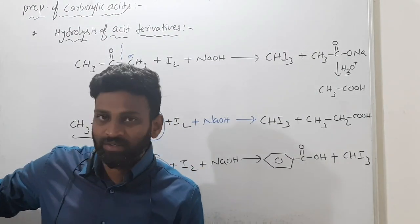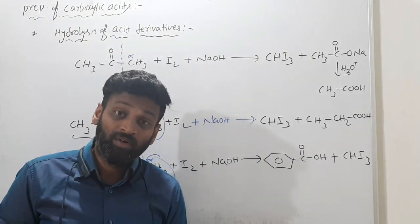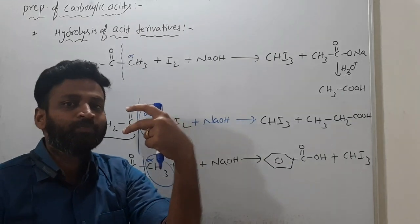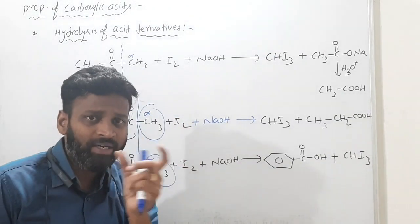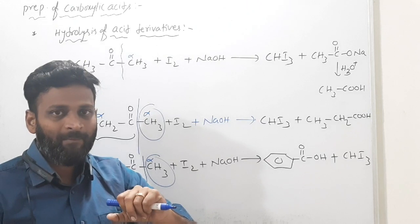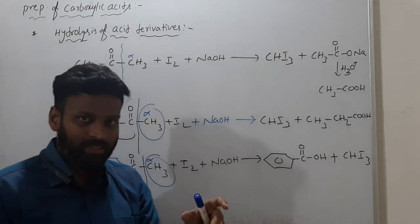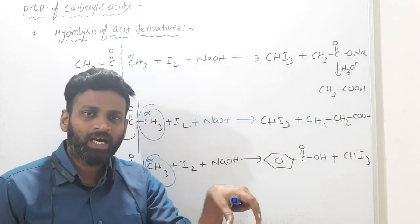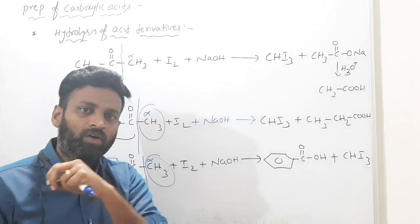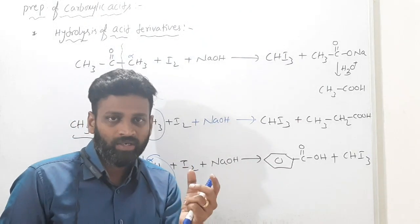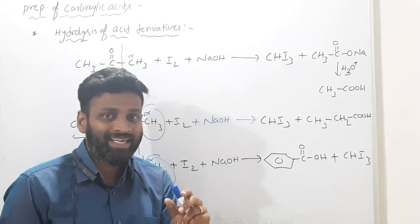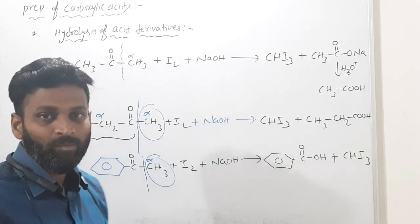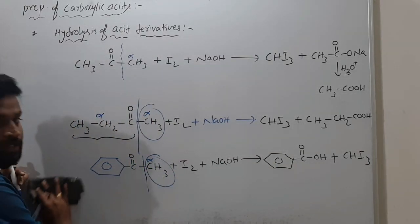From gem trihalides: gem dihalides give aldehydes and ketones on hydrolysis. Three chlorines or three bromines at the terminal carbon are trihalides. Trihalides on hydrolysis give carboxylic acids.